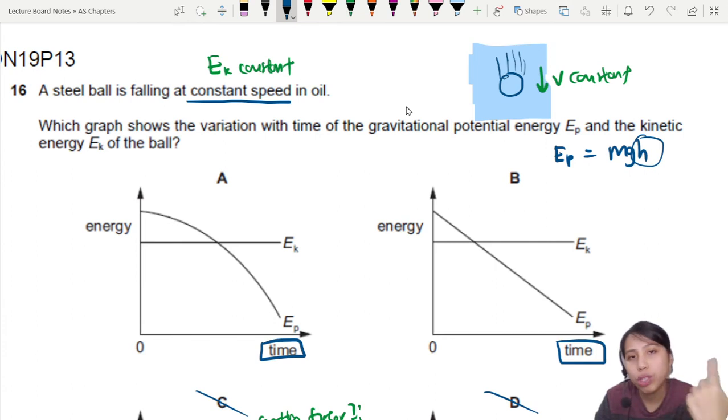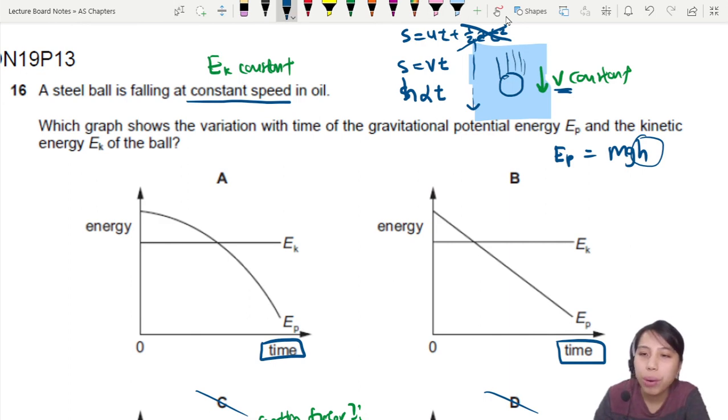We know the height is changing with respect to time as you suddenly move down, move down, move down a certain displacement. So actually you can use the equation s equals ut plus half at squared. But you see there is no acceleration, velocity is constant, so it's just s, or rather height equals to the velocity times time. So you can say the displacement or the height changes with respect to time linearly, something like that.